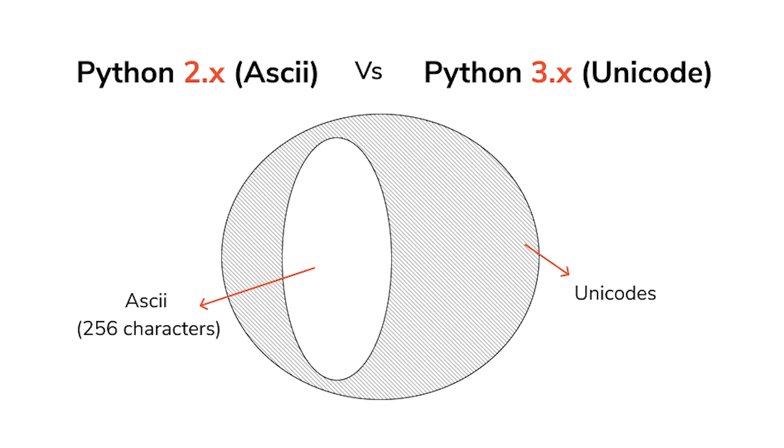Another amazing feature in Python 3 is that it uses Unicode to encode all characters and symbols, whereas Python 2 uses ASCII encoding. Unicode is considered a better encoding technique than ASCII because it can encode characters and symbols of not just English, but also other languages like Chinese, Arabic, Latin, and many more.